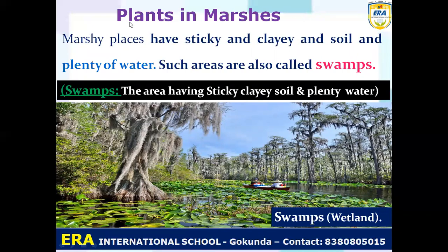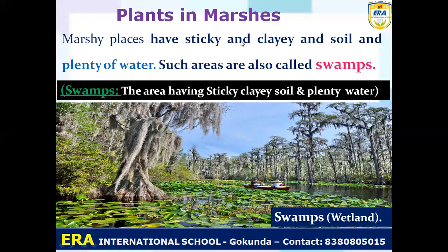The third type of terrestrial plant is plants in marshes. A marshy place has sticky and clayey soil with plenty of water — if a person stands on this soil they can sink or be submerged. Such areas are also called swamps or wetlands because water is present throughout the year. Long plants and trees grow there but there is a large amount of water.